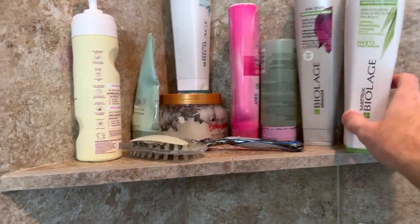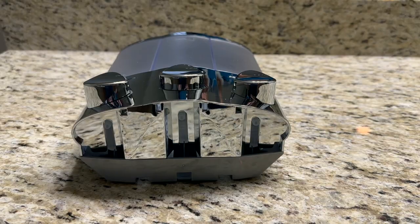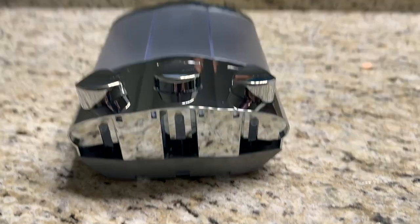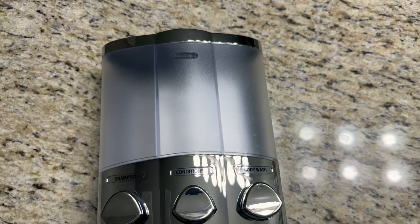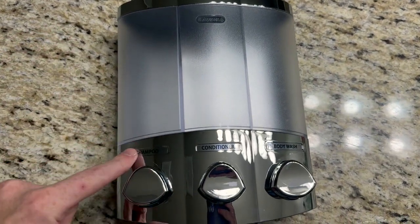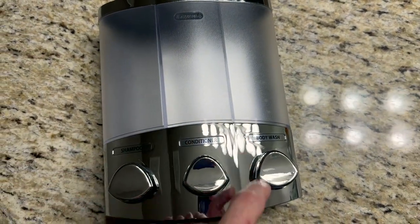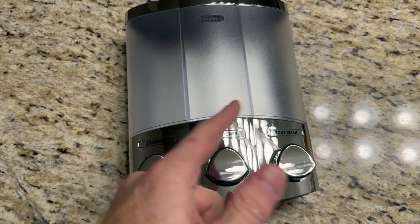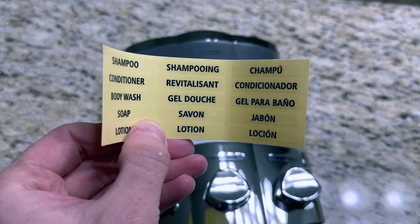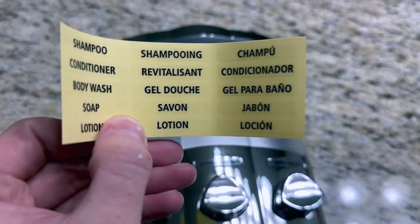Our one and only shelf is getting a little crowded up here. So here is our new three-chamber soap dispenser. It says shampoo, conditioner, and body wash, but it does come with little labels that you can put on whatever you want it to be. Gotta make sure you put the gel douche in there.